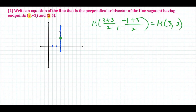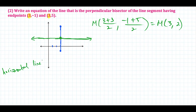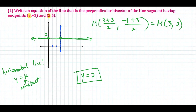Since the original line segment is vertical, the perpendicular bisector is a horizontal line. A horizontal line always has the equation y = k, where k is the y-value where the line sits. The line passes through y = 2, so the equation is simply y = 2. A vertical line has undefined slope, and the horizontal bisector has slope 0.